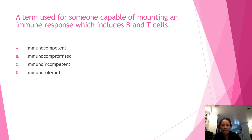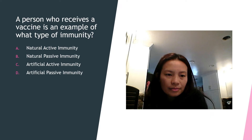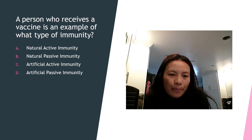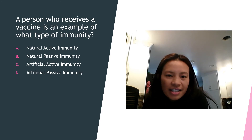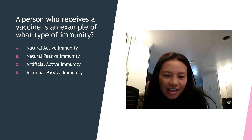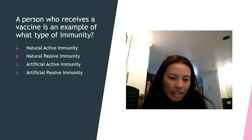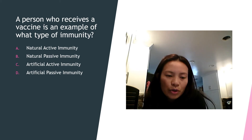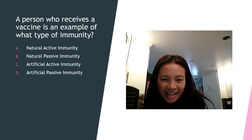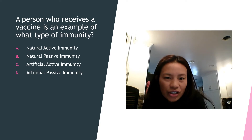Question five: a person who receives a vaccine is an example of what type of immunity? Is it A) natural active immunity, B) natural passive immunity, C) artificial active immunity, or D) artificial passive immunity? The answer is letter C — artificial active immunity.